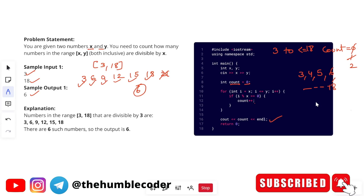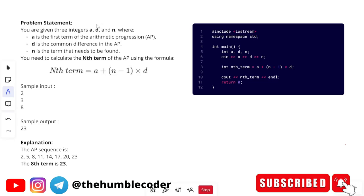Let's now see the next problem. Let's see this problem that we have. You are given three integers a, d, and n, where a is the first term of the arithmetic progression, d is the common difference in the arithmetic progression, and n is the number or the term that needs to be found. You need to calculate the nth term of an arithmetic progression using the formula. The formula for nth term is a plus n minus 1 into d.